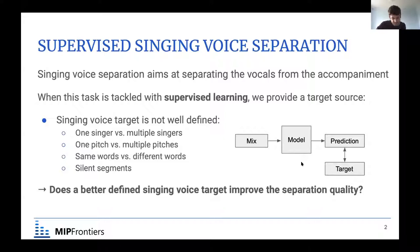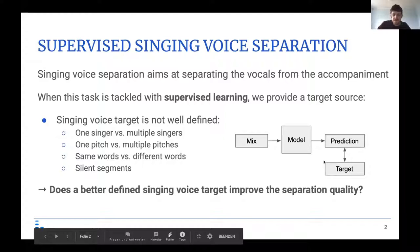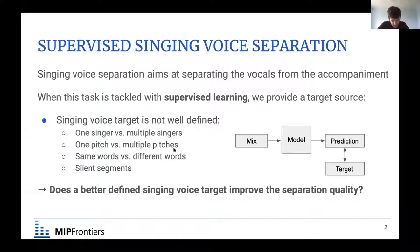We observed that in datasets for singing voice separation, what is defined as singing voice is quite diverse, and it's very difficult to give a really good definition. For example, you can have only one singer or multiple singers. Multiple singers can sing the same pitch or harmonies, the same words or different words. You can also have background singers, and silent segments where the prediction should be silent, which is challenging for source separation models.